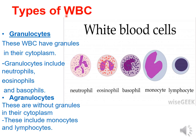There are two types of WBC: granulocytes and agranulocytes. Granulocytes have granules in their cytoplasm and include neutrophil, eosinophil, and basophil — you can see the small circle-like granules in the cytoplasm. The second type is agranulocytes, which are without granules in the cytoplasm. They are monocyte and lymphocyte. You can see the cytoplasm is free of granules in these cells.